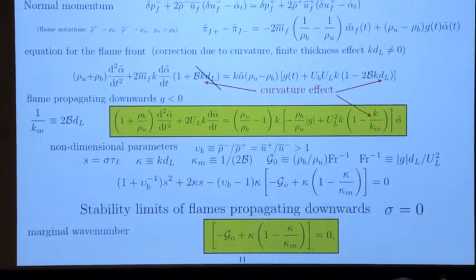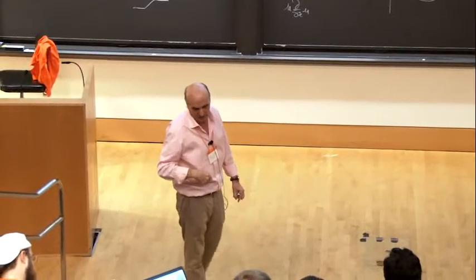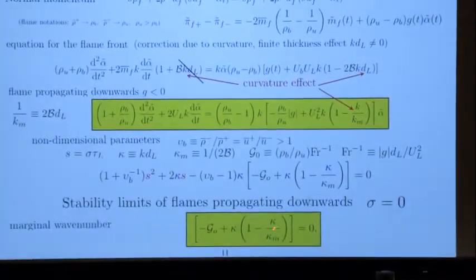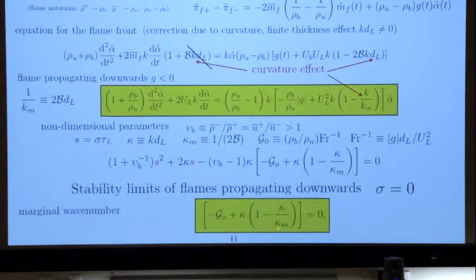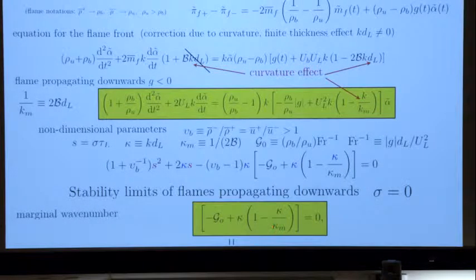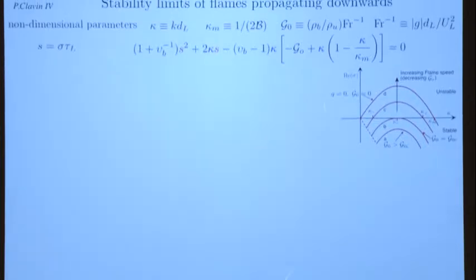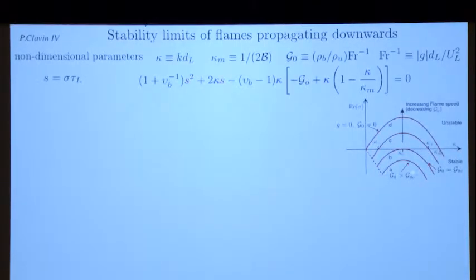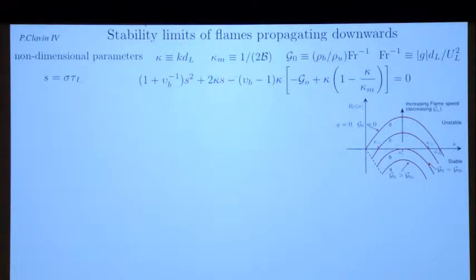Everything proportional to kappa is due to Darrieus-Landau instability. The gravity effect is here. This Darrieus-Landau instability term is destabilizing, and this other term is a stabilizing effect at small wavelengths. I have written the solution of this equation for different values of g in terms of k. This curve is the solution of this equation. When the acceleration is very strong — the minus g_0 stabilizes the small k, that is, the long wavelengths — when propagating downward, not upward.